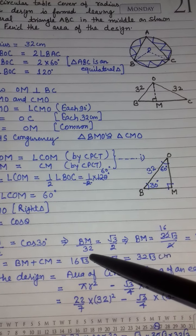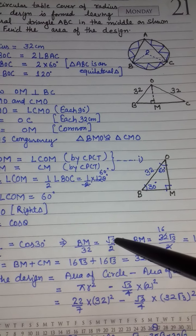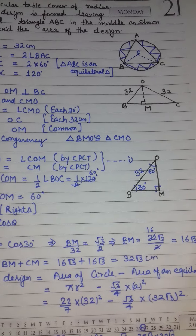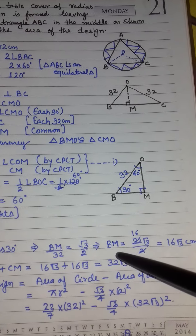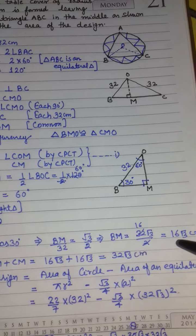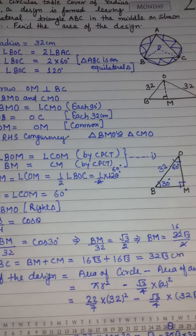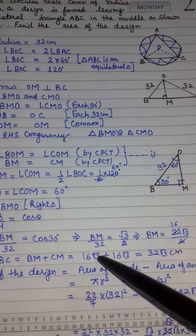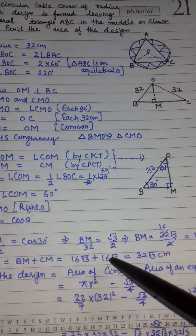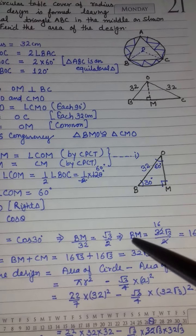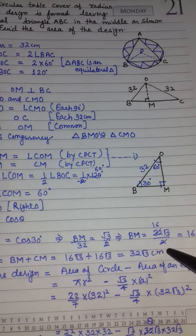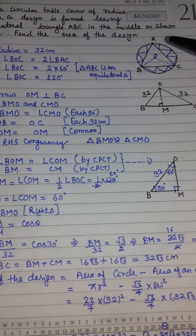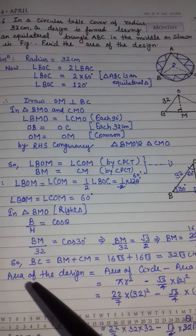Cross multiply करने पर BM = 32 × √3/2 = 16√3 cm। BM और CM दोनों equal हैं, इसलिए BC = BM + CM = 16√3 + 16√3 = 32√3 cm।